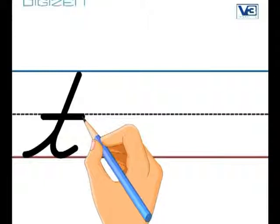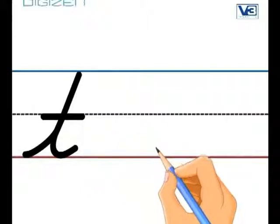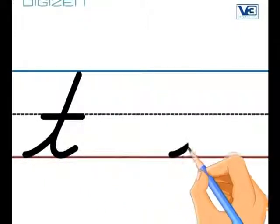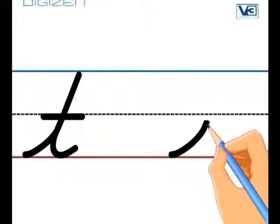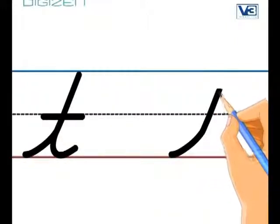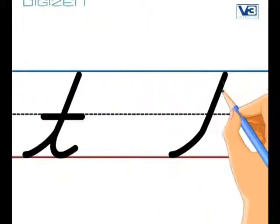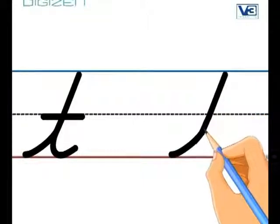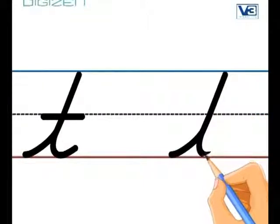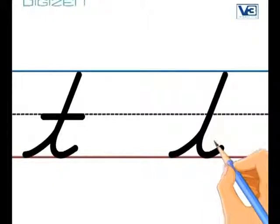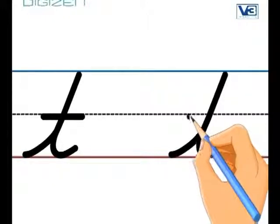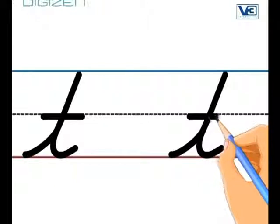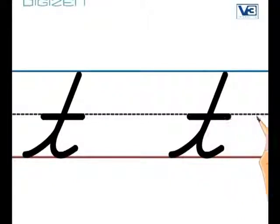Now you try it. Start at that bottom line. Then zip up to the top. Zoom down. Do your cursive curl. And cross your T for your cursive T.